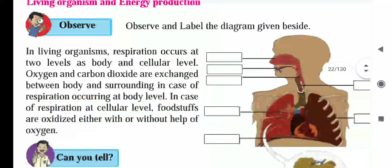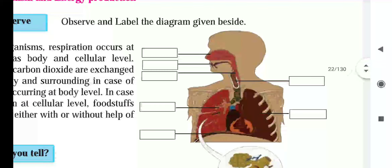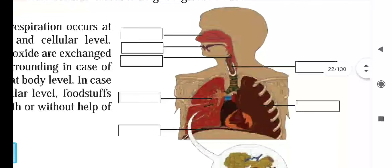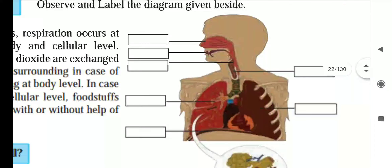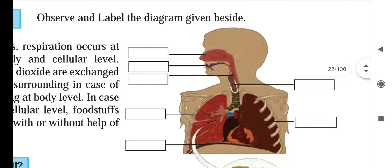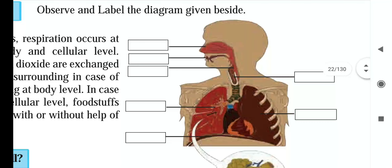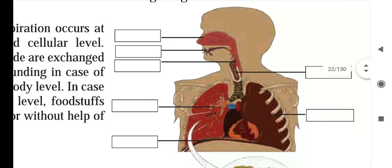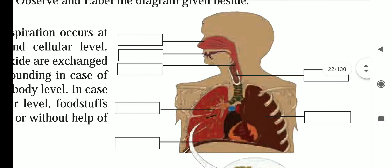So observe the diagram and label it. It is a diagram of the human respiratory system. We can look at the nostril, pharynx...